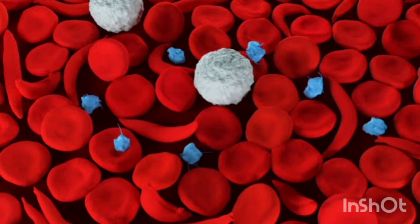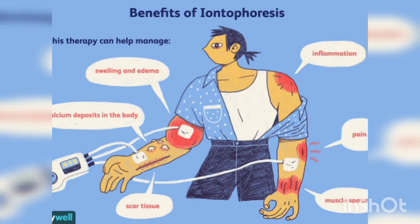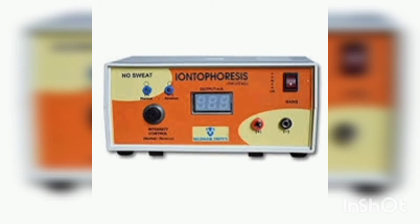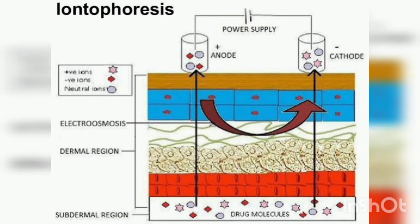These are classified into four categories. Firstly, iontophoresis — in this method, a drug is driven deep into the skin by means of a galvanic current. Example: salicylates. Anode iontophoresis is used for positively charged drugs and cathode iontophoresis is used for negatively charged compounds. The force of repulsion between similar charges drives the drug deep into the tissues.